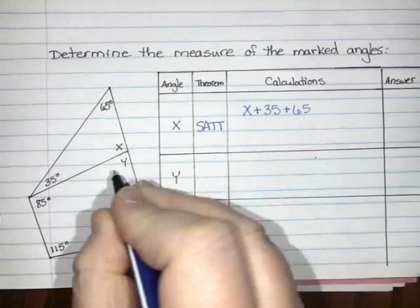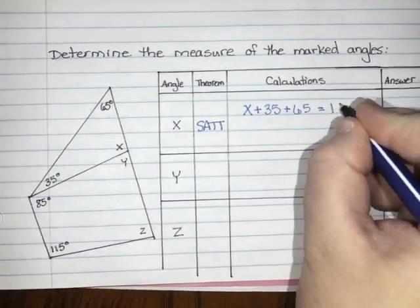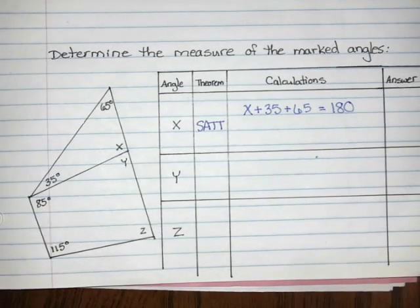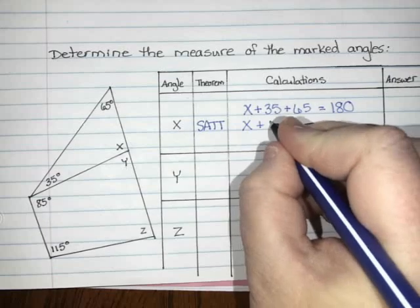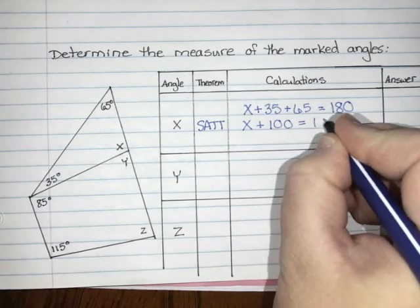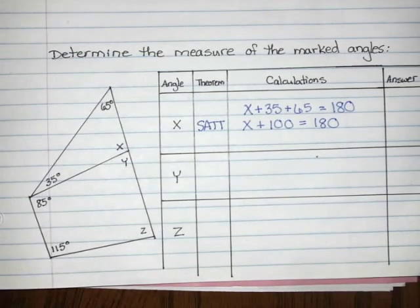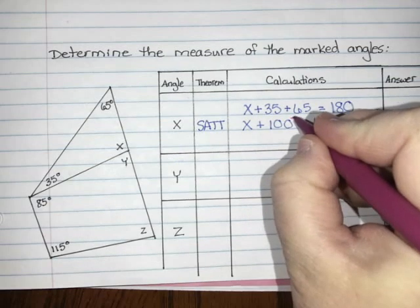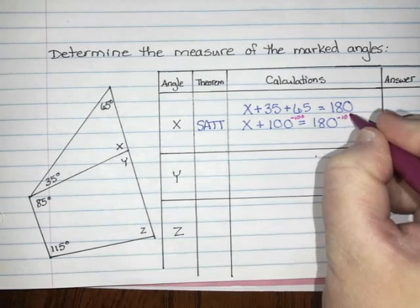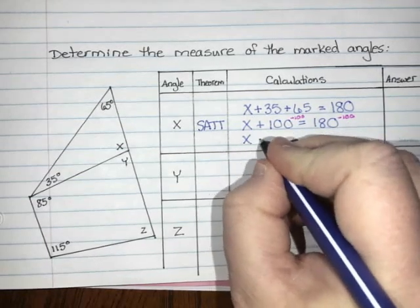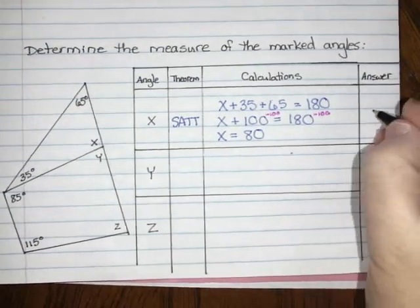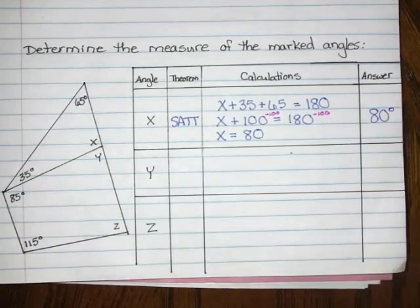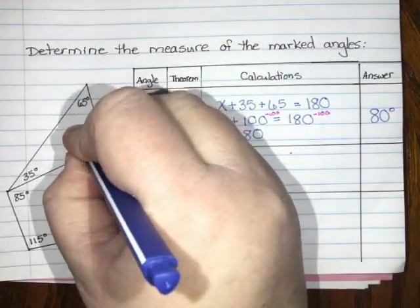Those three angles should add to 180 degrees, so x plus 35 plus 65 equals 180. I'll collect my like terms: 35 and 65 add to 100, so x plus 100 equals 180. Subtracting 100 from both sides gives x equals 80 degrees. Our final answer is 80 degrees, and I'm going to label that on my picture as well.